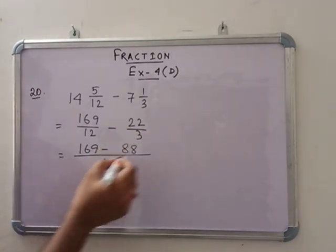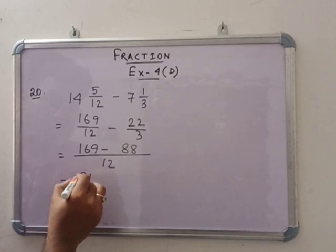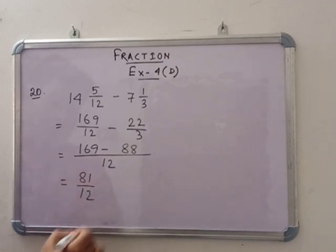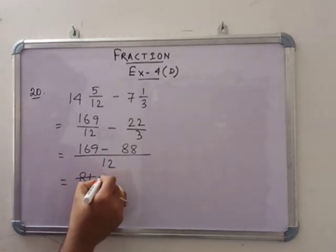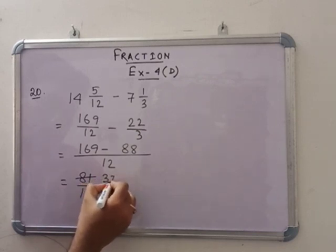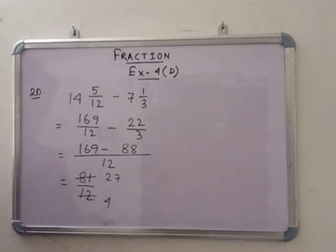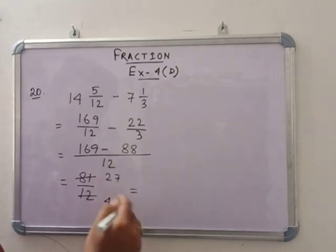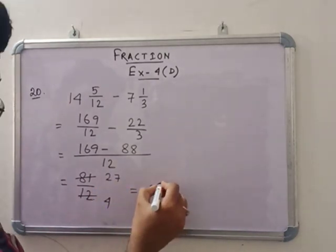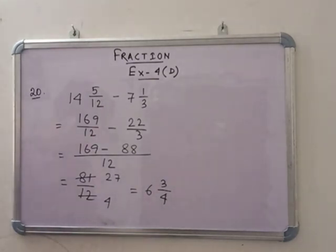So subtract each, so this is 81 by 12. If we divide by 3, then this is 27 by 4. 27 by 4, that means 6 and 3 by 4. So 6 and 3 by 4 is the answer.